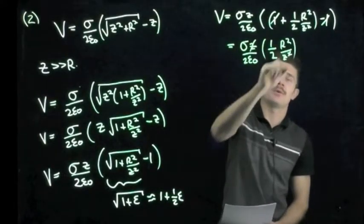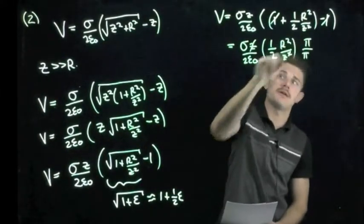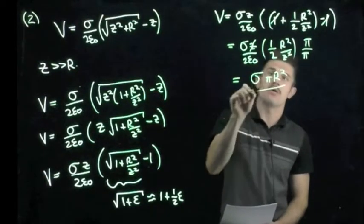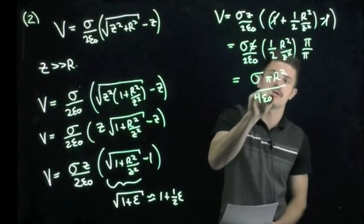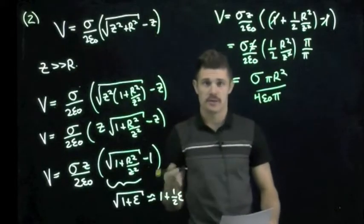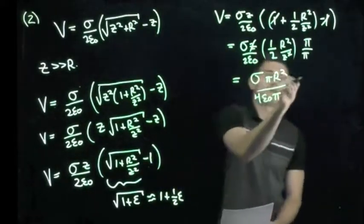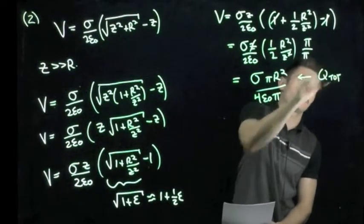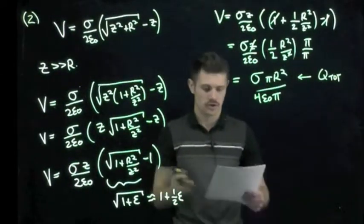We cancel a z and we multiply top and bottom by pi. We end up with sigma times pi r squared over four epsilon naught times pi. And the reason I multiplied the top and the bottom by pi was because this term on the top now looks very much like the total charge on our charged disk.